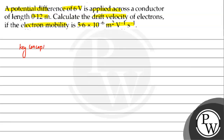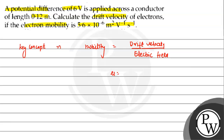This is the key concept. It is the relationship between drift velocity, mobility, and electric field. Mobility, symbol mu, equals drift velocity upon electric field. So mu equals Vd upon E.